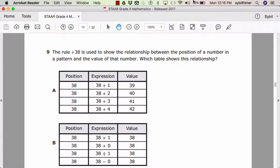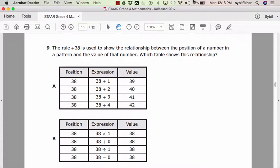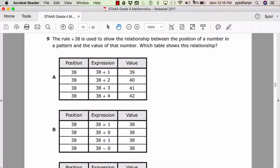Number 9. The rule plus thirty-eight is used to show the relationship between the position of a number in a pattern and the value of that number. Which table shows this relationship? Position, expression, value. Thirty-eight, thirty-eight plus one, value thirty-nine, and so on. Plus one, plus two, plus three, plus four.